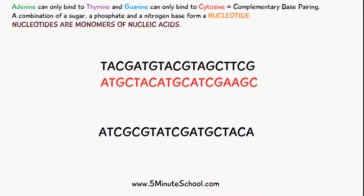Lastly, we have complementary base pairing. Here we have an example strand of DNA where T is thymine, A is adenine, C is cytosine, and G is guanine. Based on complementary base pairing, each base will bind to a specific other base: thymine to adenine, adenine to thymine, cytosine to guanine, and guanine to cytosine.